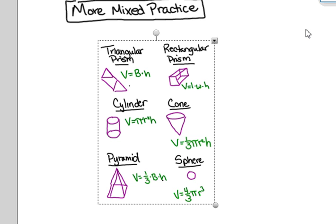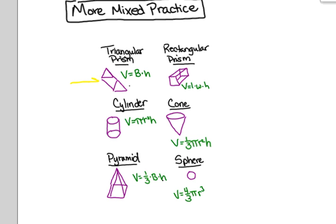The most important thing with all of these problems is that you correctly identify what shape you're working with, and then use the correct formula. Remember, for the triangular prism, you're going to look for those bases in the shapes of triangles. For the cylinder, you're going to look for the circles at the top and the bottom of your figure. For the pyramid, it's going to have one flat base that narrows to a point up at the top. The rectangular prism — think about it as being a box.